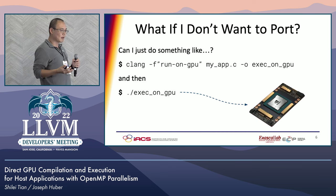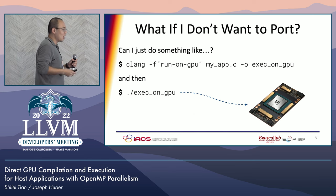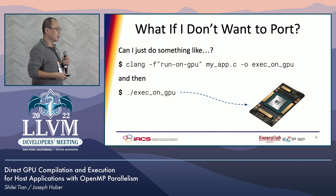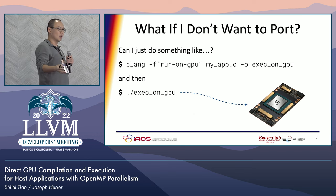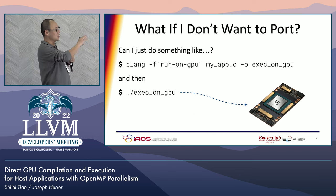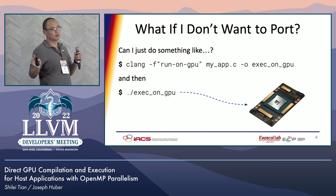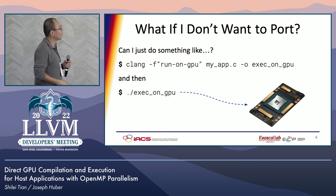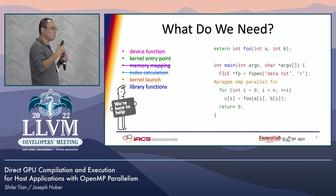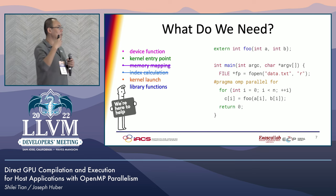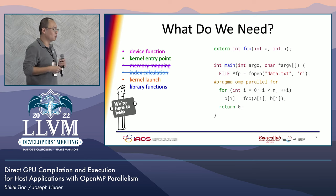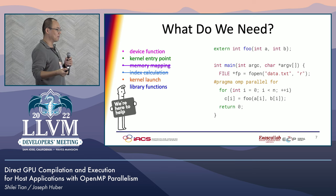So, what if I don't want to port? Can I just magically call the compiler, say I want my program to run on GPU, and simply run the executable and it runs on GPU? Well, we are here to help. As a compiler developer, let's first think about what we need to make it happen.